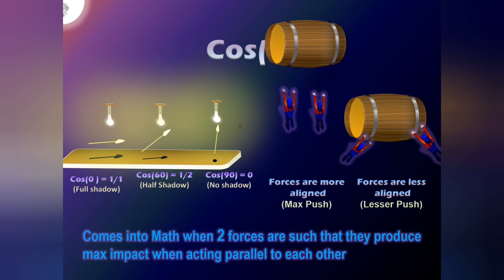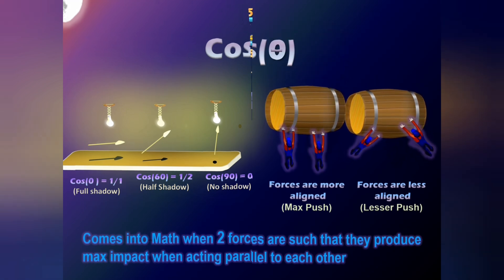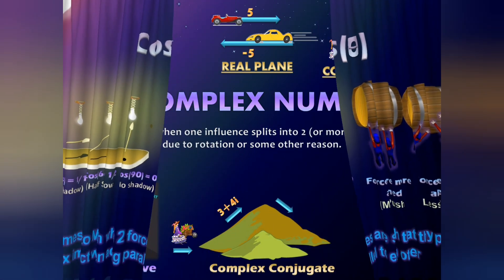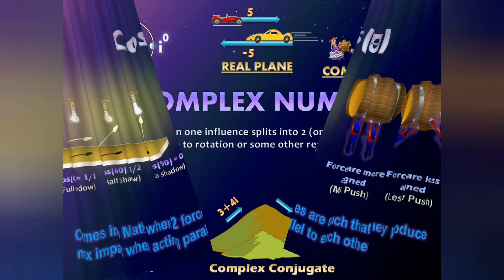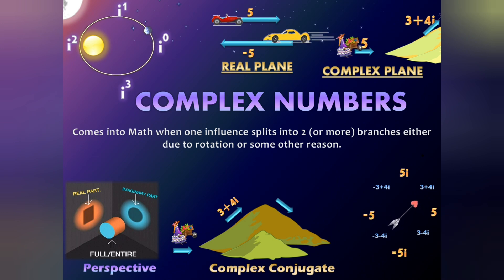Complex numbers come into math whenever one parent force or influence gets divided into two daughter influences. You can call one daughter influence as the real part and the other daughter force as the imaginary part.